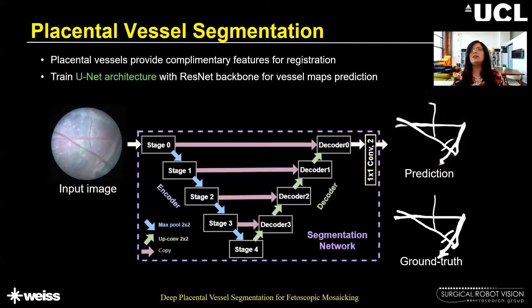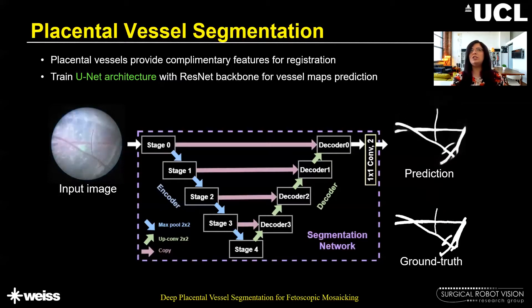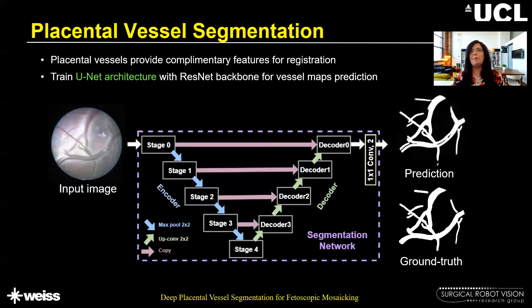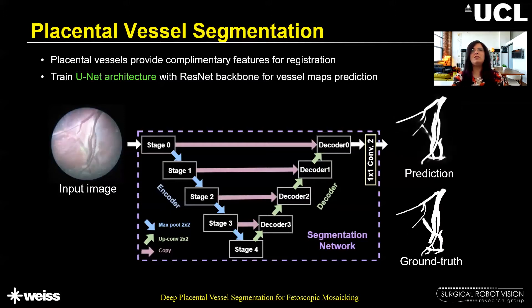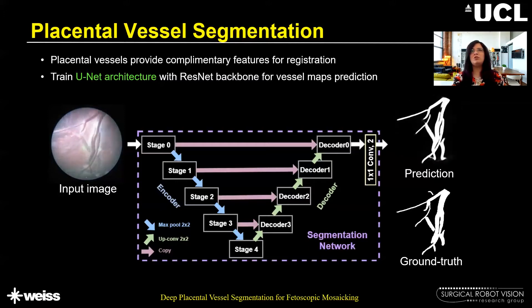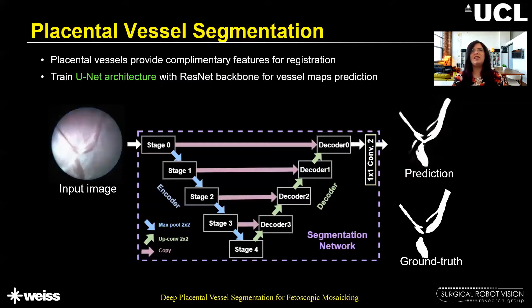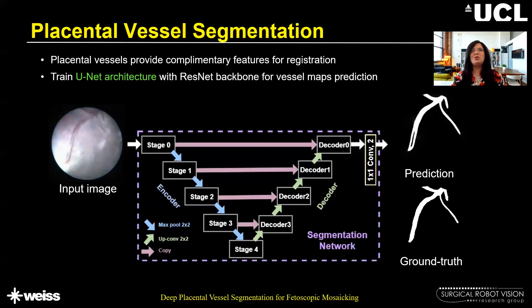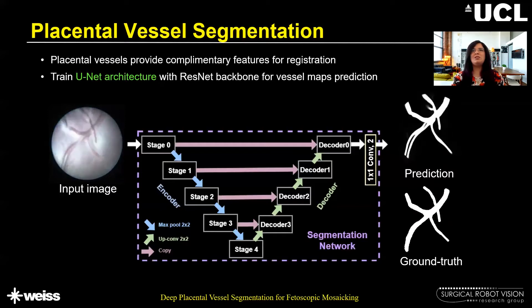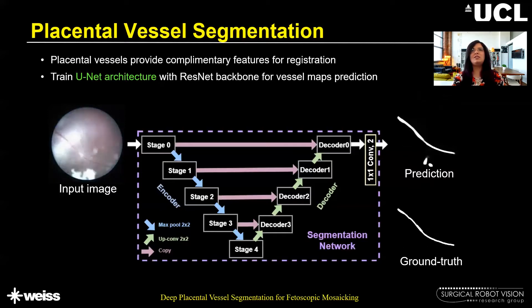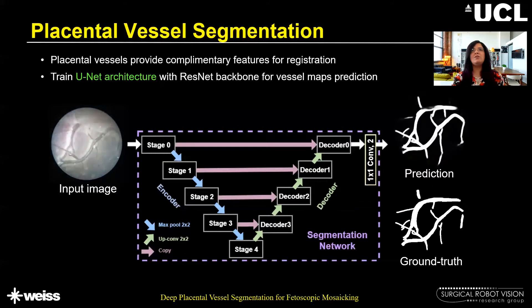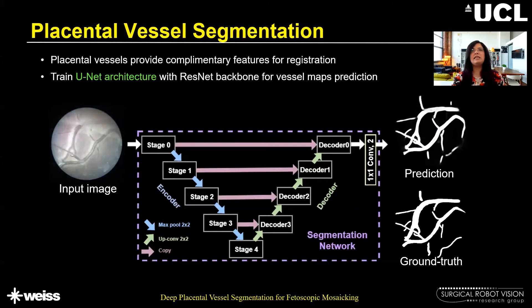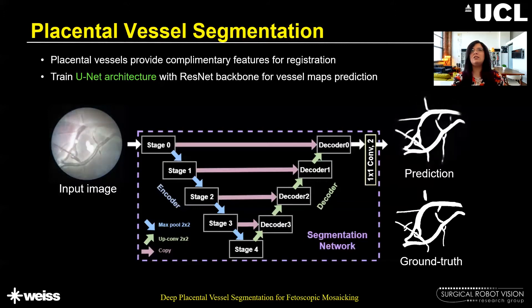Since vessels have unique recognizable shapes, they can be very effective in registration and mosaicing. We use U-Net for placental vessel segmentation, which is a fully convolutional network. U-Net is preferred for medical image segmentation since it results in accurate segmentation even when the training data is relatively small.